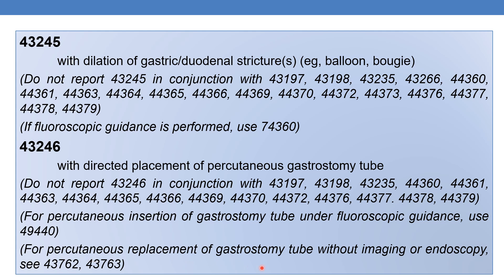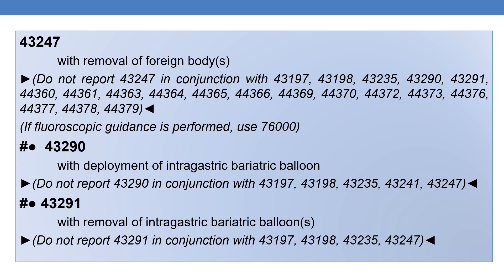For percutaneous replacement of gastrostomy tube without imaging or endoscopy, use 43762 and 43763. The next CPT is 43247: esophagogastroduodenoscopy, flexible, transoral, with removal of foreign body. If fluoroscopic guidance is performed, use 76000 along with 43247.